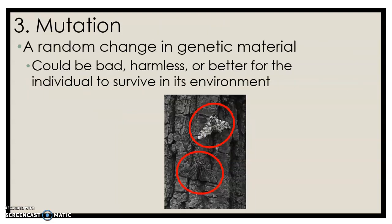Mutation is a random change in the genetic material. It could be bad, harmless, or it could give an organism an advantage over others in its environment. The peppered moth example illustrates this well — the speckled moth really sticks out in the dark environment, but the black moth blends in with the bark and clearly has an advantage. The first moth with that mutation was able to blend in, survive, and reproduce, so over time we see more black-colored moths because they blend in better.